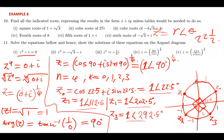The angles between these complex numbers — no matter how many there are, four, five, six — are always supposed to be the same. In this case, we've discovered the angles between the complex numbers are 90 degrees. That's why when you subtract them you find 90-degree angles. That is how you prove that your answer, your complex roots, are correct.